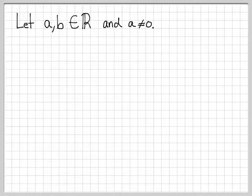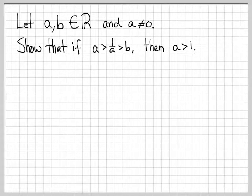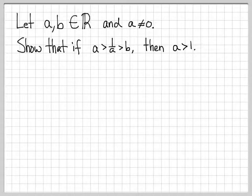In this problem, we're dealing with real numbers a and b, with a not equal to 0. We're going to show that if a is greater than 1 over a, which is greater than b, then a has to be greater than 1. Intuitively this makes sense — for instance, if a equals 5 and b equals 0.1, then 5 is greater than 1/5, which is greater than 0.1. We'll prove that a always has to be greater than 1 for this to hold.